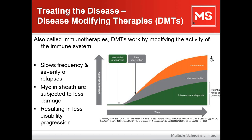We'll be covering what we call disease modifying therapies, also known as immunotherapies, which work by modifying the immune system. These medications slow the frequency and severity of relapses by getting in the way of our immune system attacking the central nervous system, meaning the myelin sheath is subjected to less damage, resulting in fewer lesions and less disability progression.